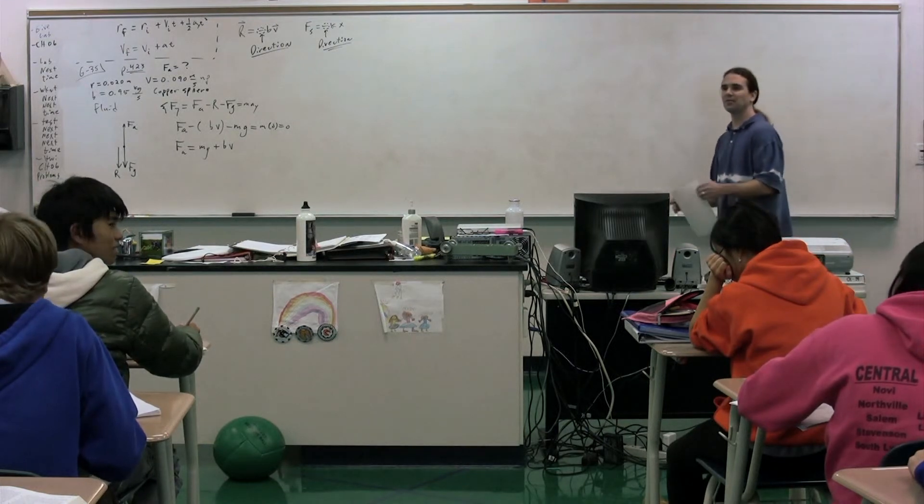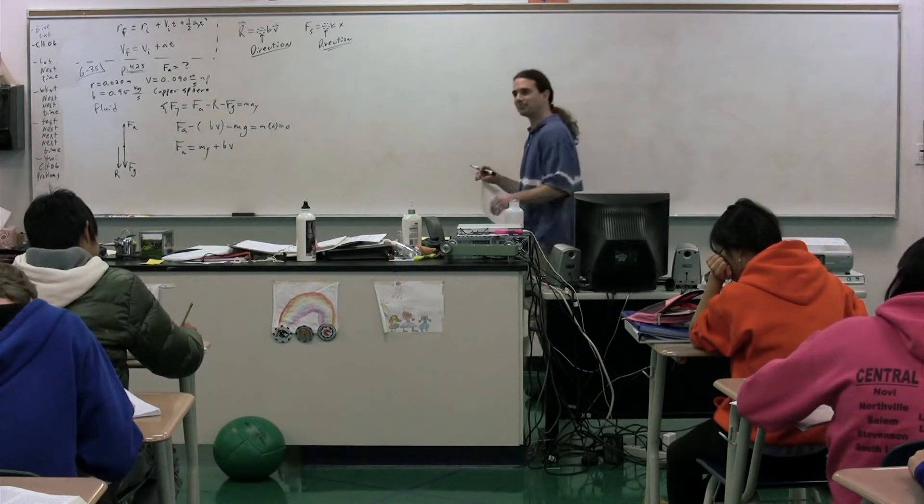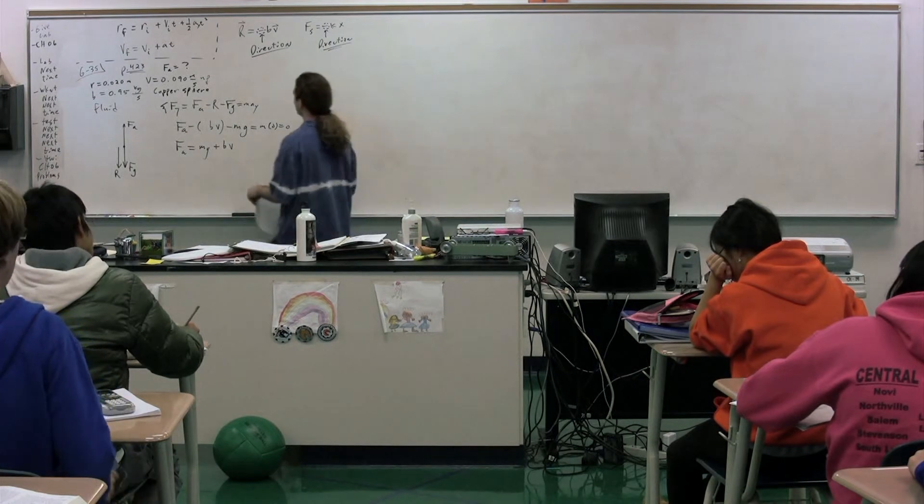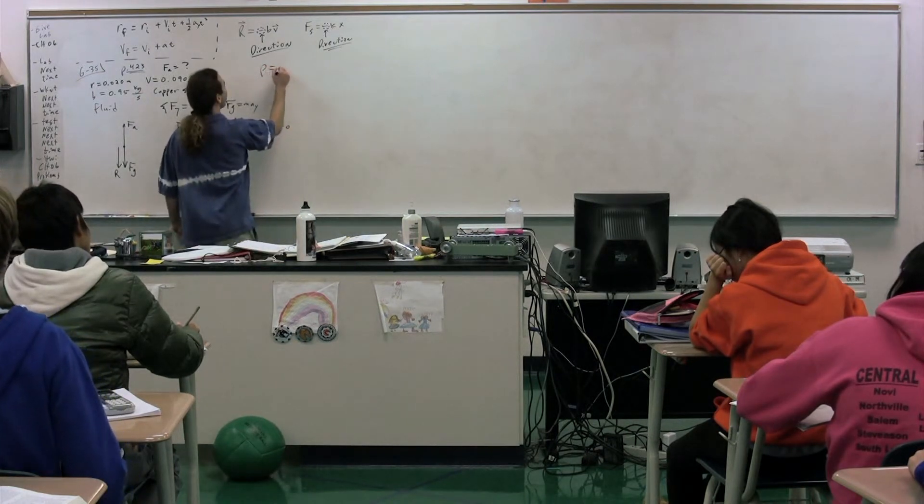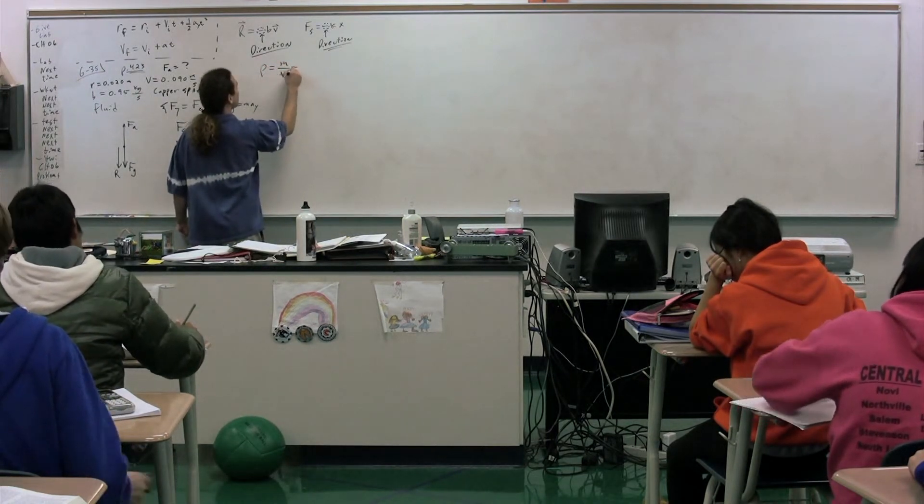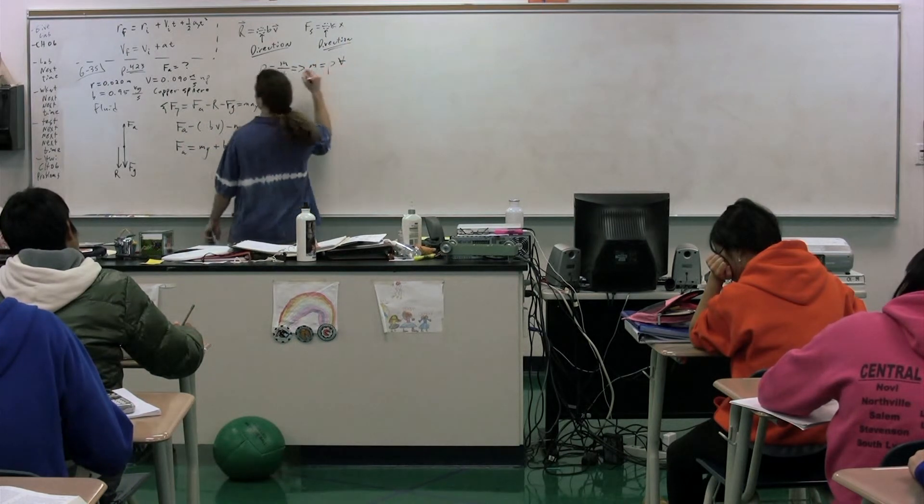How are we going to figure out the mass? Bob? Density equals mass over volume. We have the density. Mass per unit volume. Therefore, the mass is going to be equal to the density times the volume.